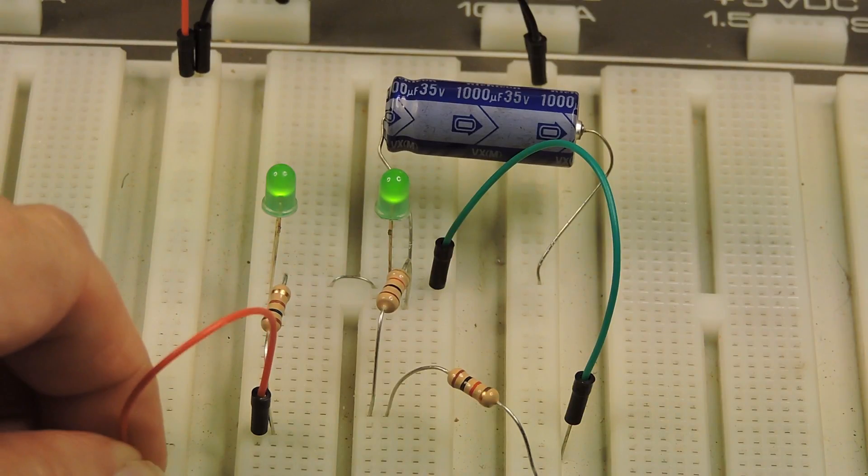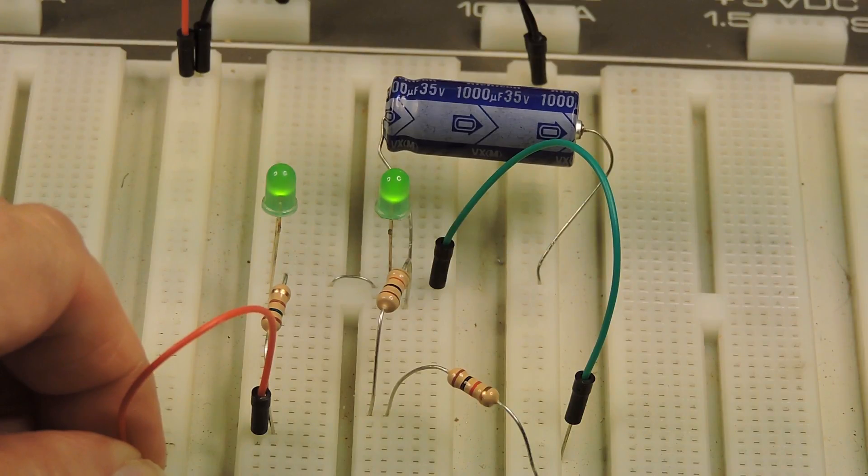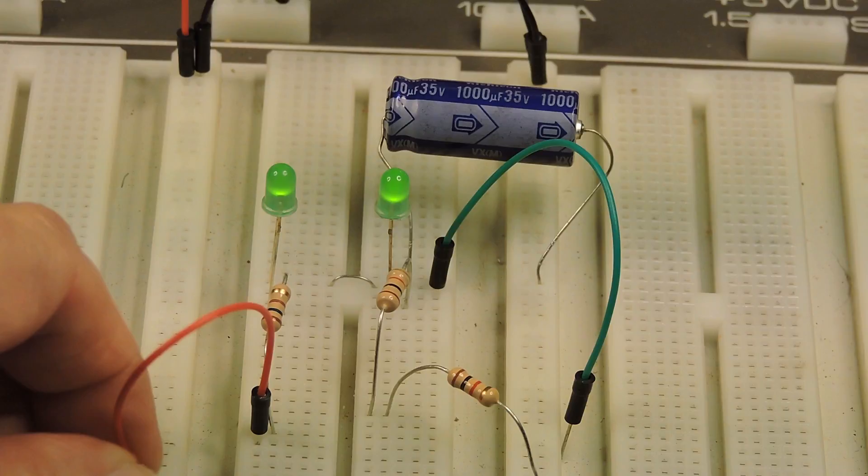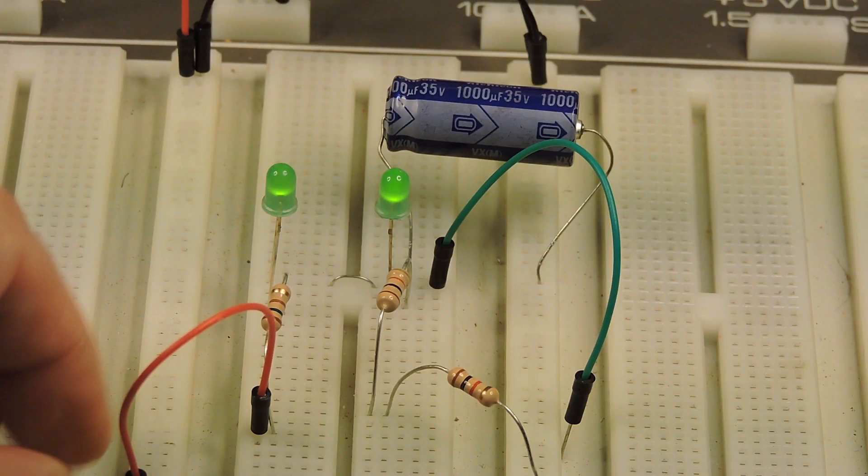And that's what is meant by current leading voltage. The current is there right away, and the voltage develops gradually or a little later.